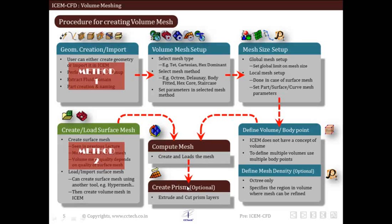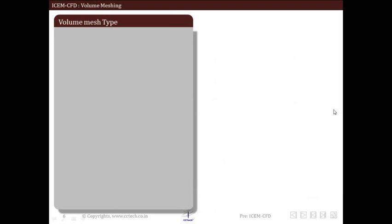After computing the mesh, we can also add prisms. Prism elements are necessary to create a well-extruded boundary layer along walls, which is important for resolving turbulent flow or flow around walls in detail. We can create a prism mesh and then merge it with the volume mesh to create an overall highly resolved volume mesh. We will now see volume mesh types.